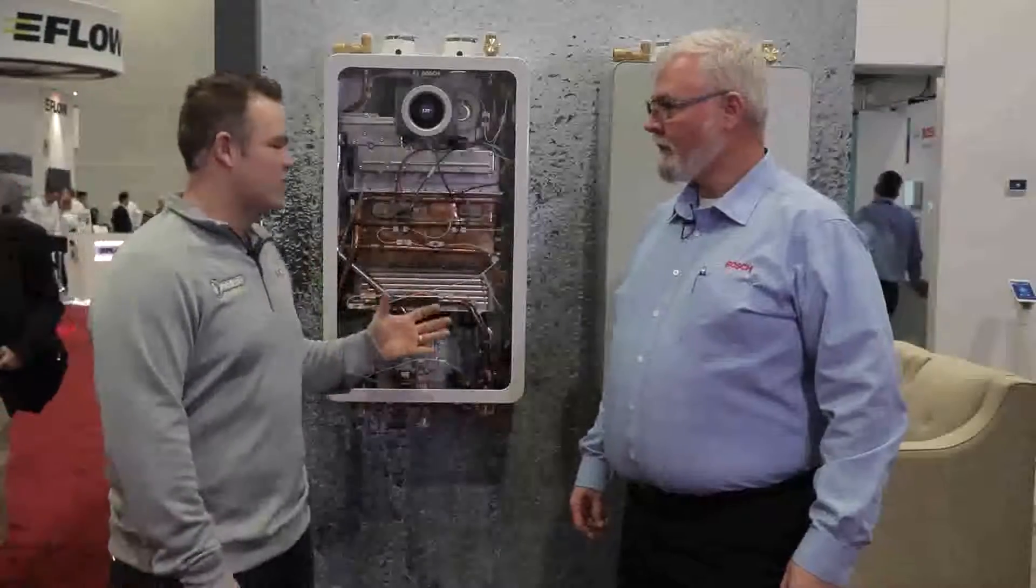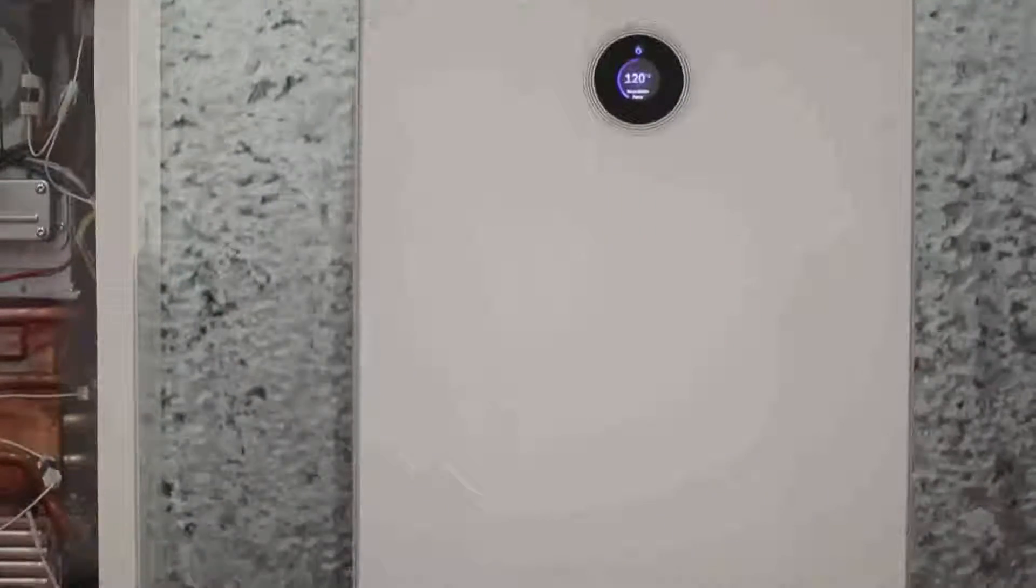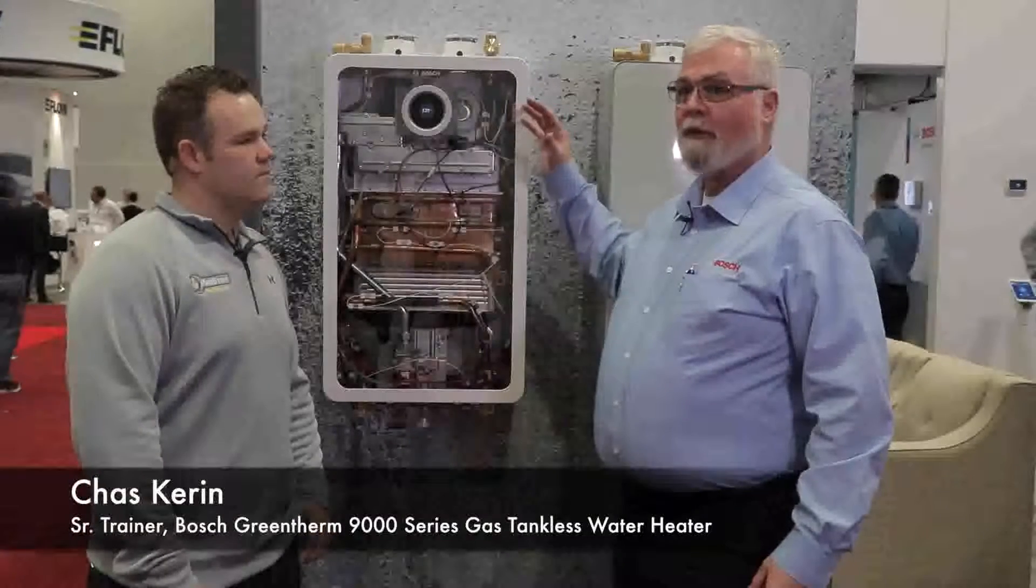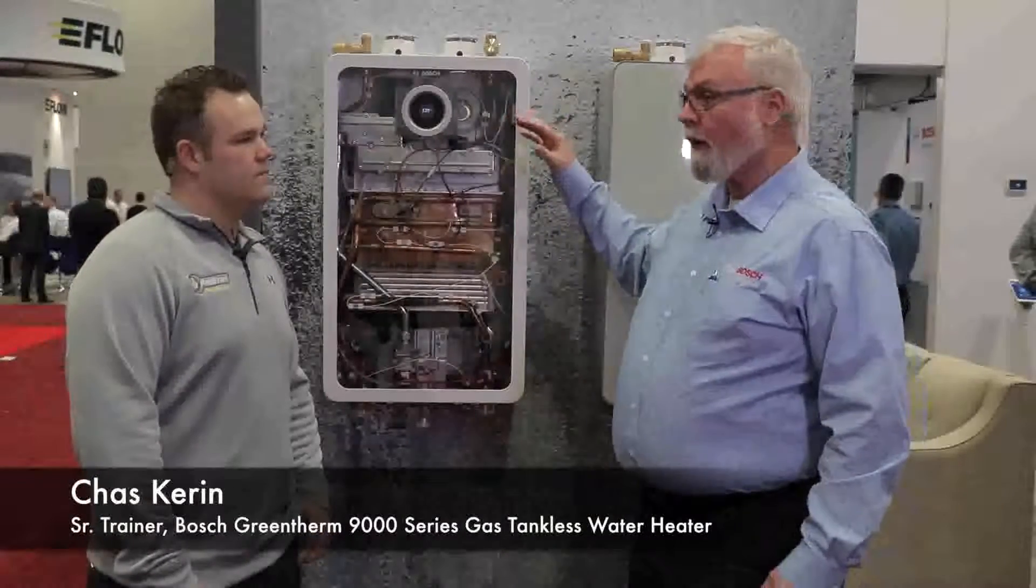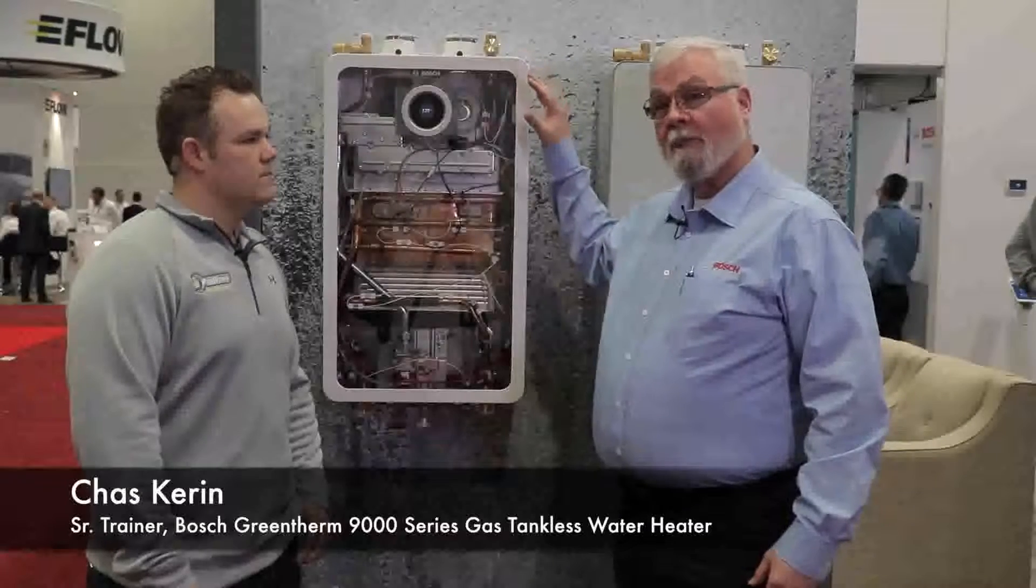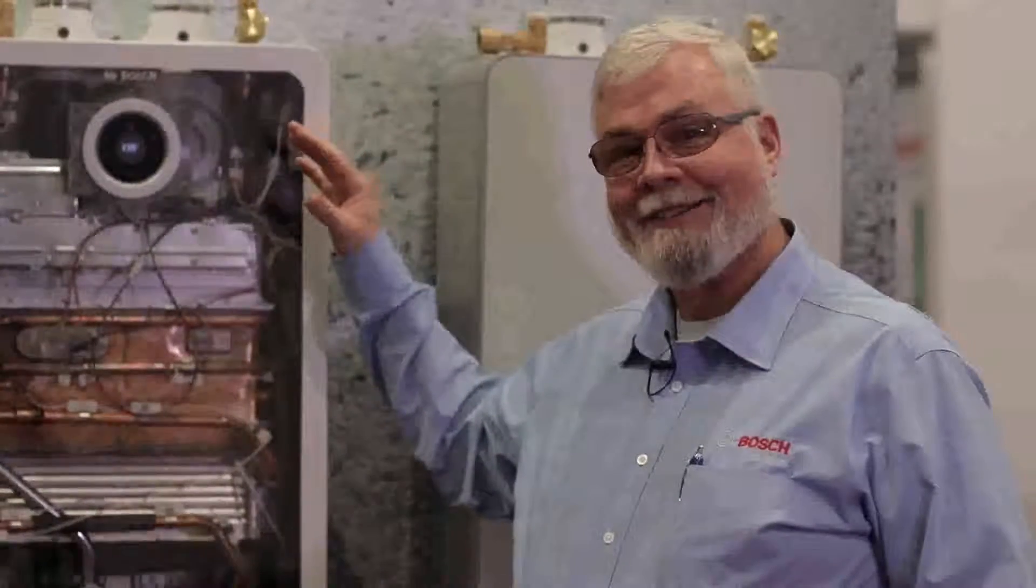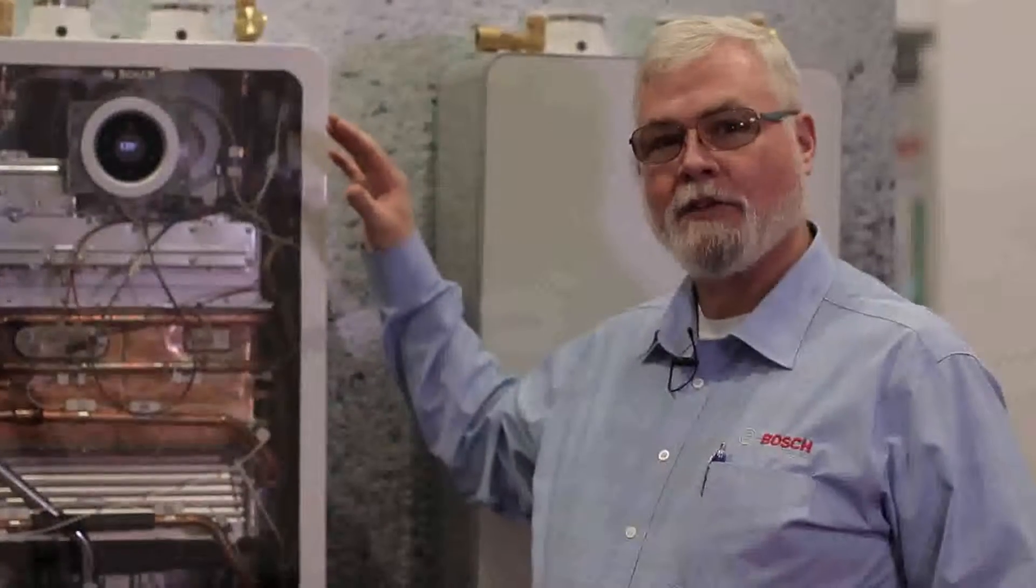We're looking at the GreenTherm 9000 series tankless water heaters. This is special, it's new. The GreenTherm 9000 series is a range of nine different tankless water heaters designed for both domestic water heating for residences as well as water heating for commercial. The first range of products that are going to come here to the United States will be 160,000 and 199,000 BTUs respectively.